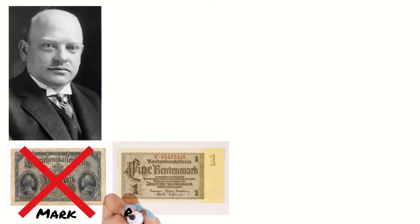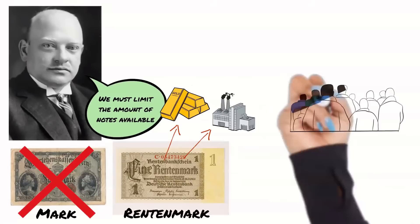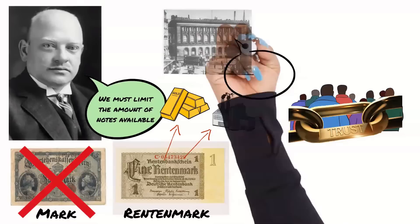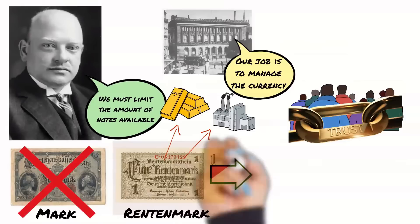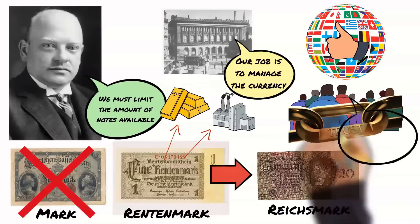In order to do this, Stresemann got rid of the mark and set up the Rentenmark in its place. This worked to reverse hyperinflation because the supply of the notes was strictly limited and the value of the notes was linked to the price of gold and supported by German industry. This meant that people could see the new money had real value and they could trust it. Then in August 1924, the Reich Bank was set up to control the currency, removing it from government control. The new currency was renamed the Reich Mark, the economy settled down, and people could have faith in their currency. This meant hyperinflation was over.